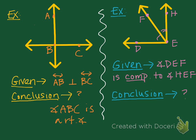Since these two angles are complementary, they form a 90 degree angle. So we can say the measure of angle DEH — the angle they form when added together — equals 90 degrees. This is the end of this set of notes, so go ahead and stop and do a summary.